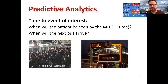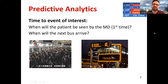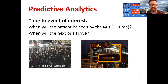Moving on to predictive analytics, which will be the focus of this tutorial — we're trying to give the customer an estimate of the time until some event of interest. For example, when will the patient on the left see the doctor for the first time? Or when will the next bus arrive? We see these signs all over some cities. This is done to reduce uncertainty and help customers plan their journey through the system better. If the bus is coming in 36 minutes, maybe I'll take Uber.